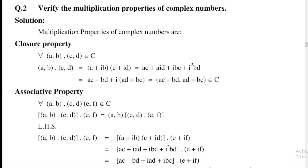First property: Closure property. For all a, b, c, d belonging to complex numbers C, the multiplication property states that (a, b) multiplied by (c, d) equals (a + ib)(c + id), which expands to ac + iad + ibc + i²bd. Since i² equals minus 1, this gives ac − bd + i(ad + bc), separating real and imaginary parts: (ac − bd, ad + bc) belongs to the complex numbers.